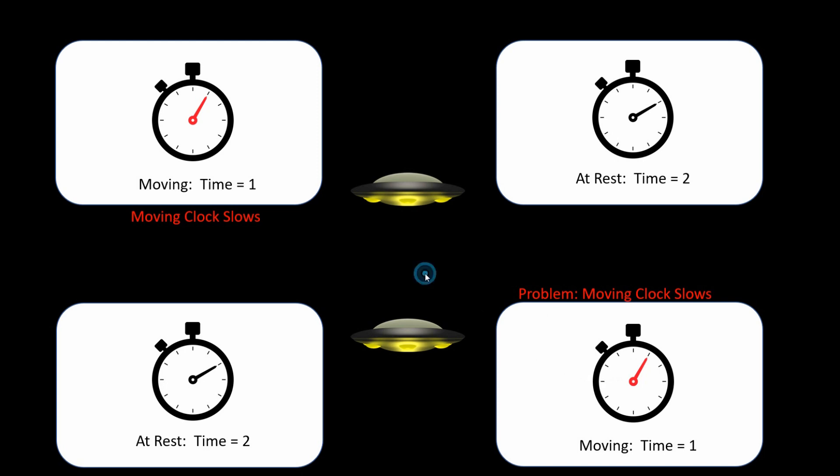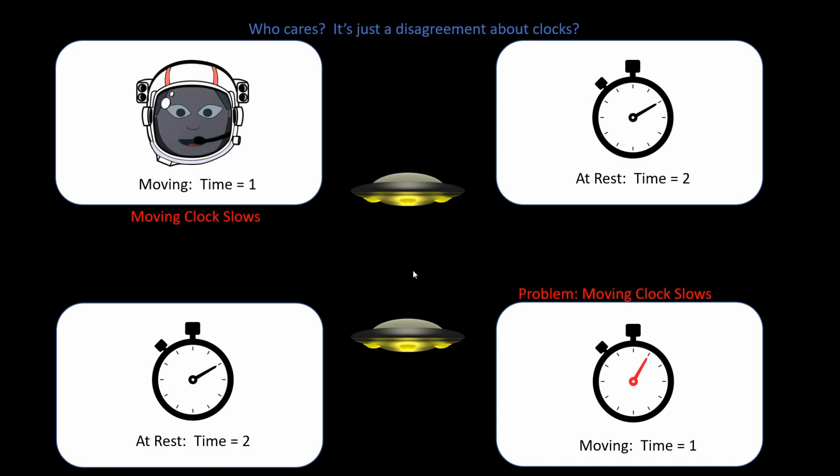Now some explanations just say, who cares? It's a disagreement about clocks. Now this is where the twins come in. What you do is you replace the clocks. You make it a little bit more serious by putting in a biological clock. So now you can say, wait a second. If it's two twins, how do they age if both clocks are moving slower?